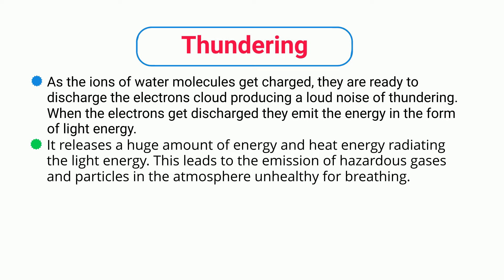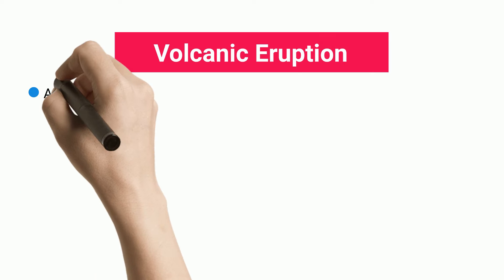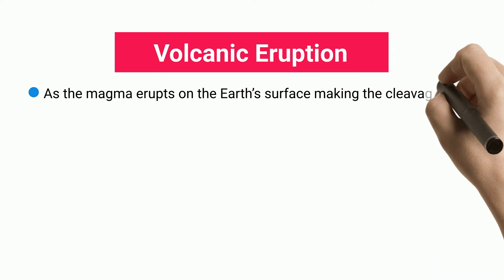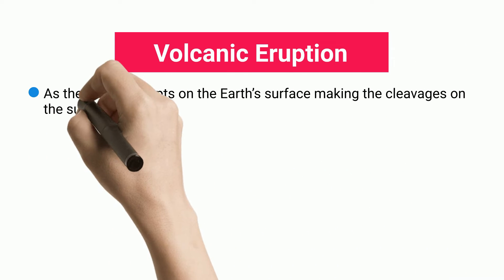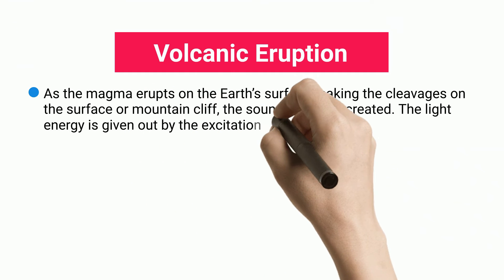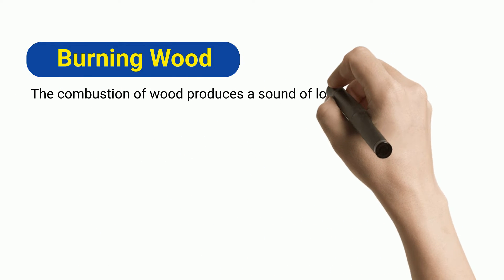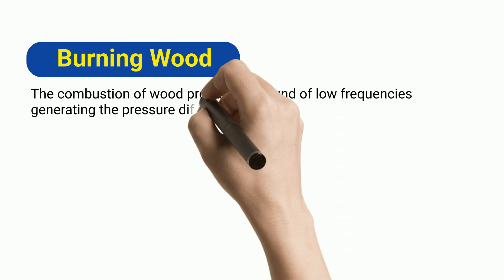The thundering radiates light energy and leads to the emission of hazardous gases and particles in the atmosphere, unhealthy for breathing. Volcanic eruption: As magma erupts on the Earth's surface, making cleavages on the surface or mountain cliff, sound energy is created and light energy is given out by the excitation of particles from the magma.